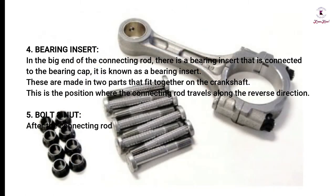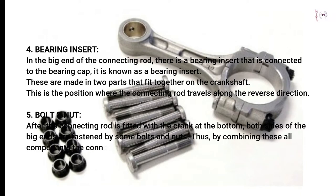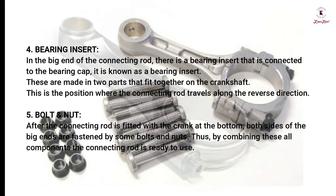Bolt and nut: After the connecting rod is fitted with the crank at the bottom, both sides of the big ends are fastened by bolts and nuts. Thus, by combining all these components, the connecting rod is ready to use.